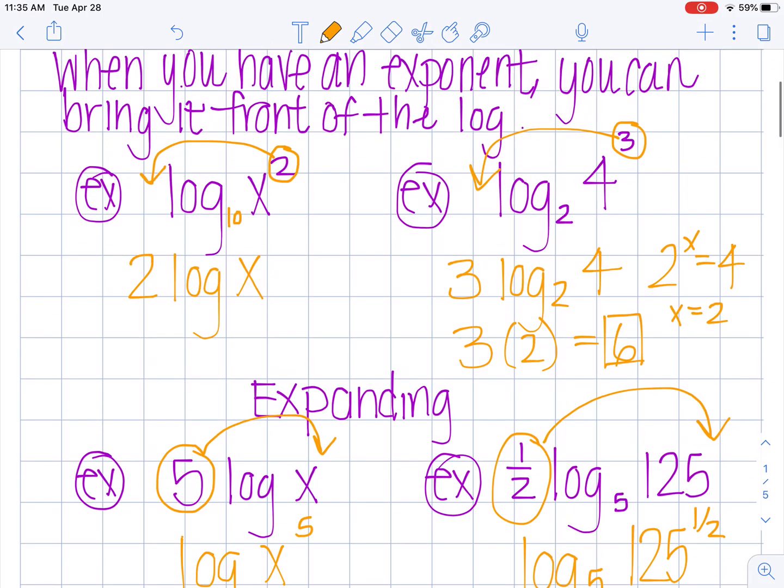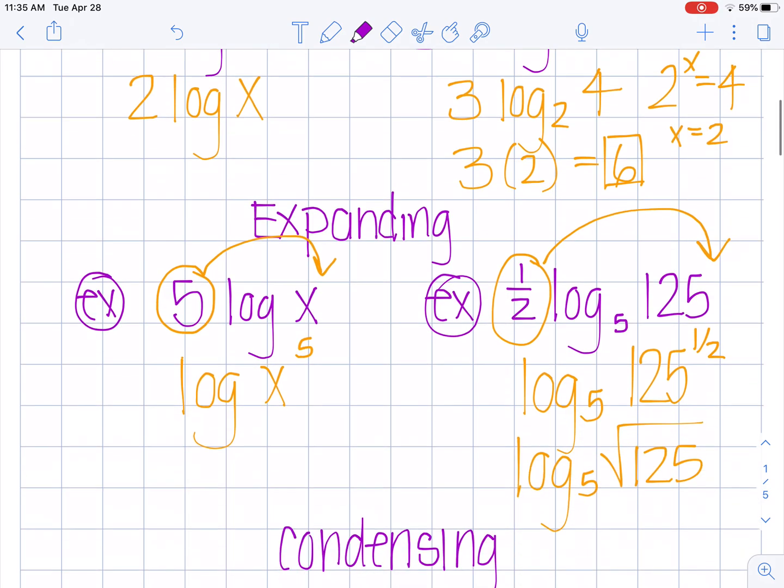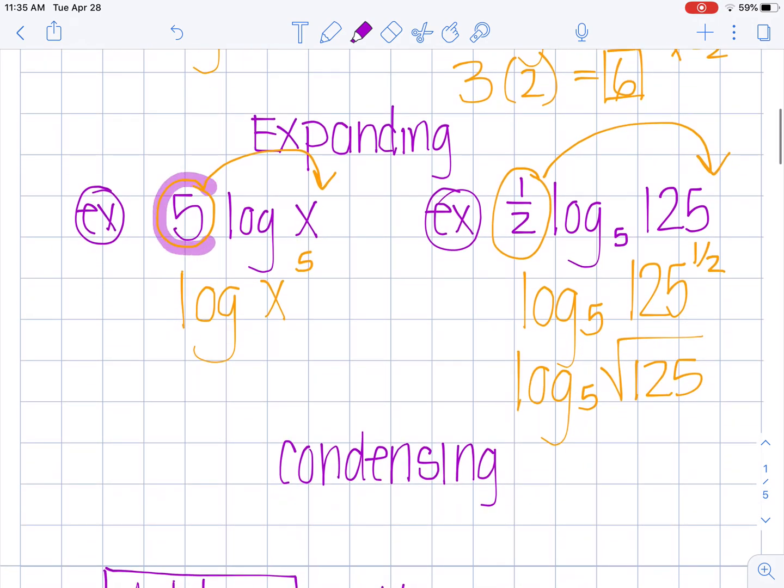We can either take our exponent and bring it down out in front by expanding, or we can take our number out in front and bring it up to the exponent and that is called condensing. That's the property of exponents.